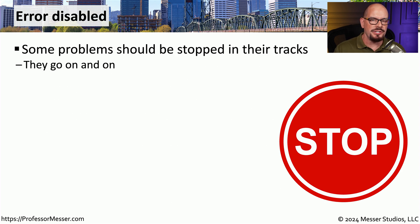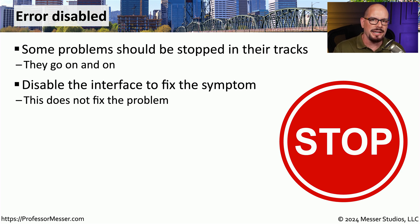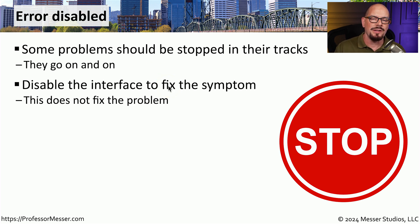Some interface issues can create a much larger problem if left unchecked. It might be a better idea to turn off certain interfaces if we run into a particular kind of problem. You can log into a device and administratively disable a particular interface — that addresses the symptom so the interface won't cause additional problems on the network. Instead of manually logging in each time, it would be much easier if the device automatically recognized the problem and disabled that interface. We refer to this state as error disabled, where the device has disabled the interface without any type of human intervention.